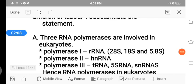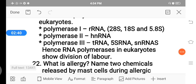The answer is, three RNA polymerases are involved in eukaryotes. One is polymerase 1, that is rRNA, that is 28S, 18S and 5.8S ribosomes. Second RNA, second hnRNA. Third is polymerase 3, tRNA, 5S rRNA, and snRNAs. Hence, these RNA polymerases in eukaryotes perform division of labor.